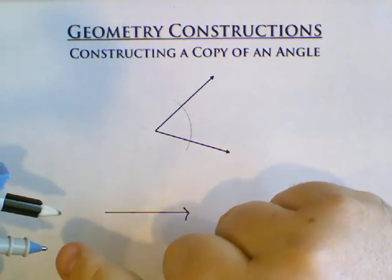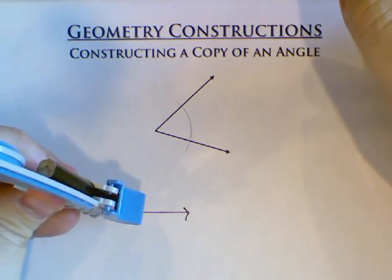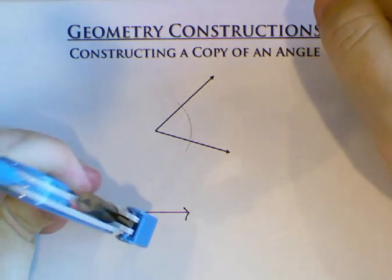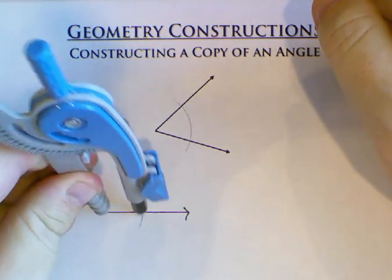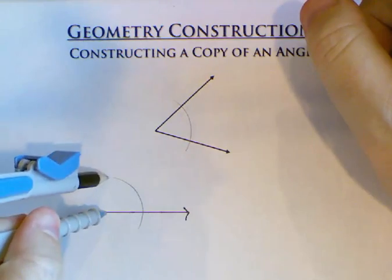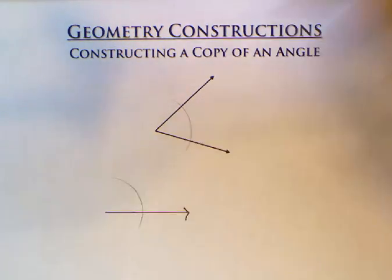And without changing the size of our compass, we're going to come down to where I made my first ray and I'm going to make a matching arc. This arc needs to be roughly the same size as that one.